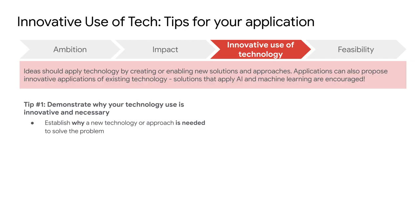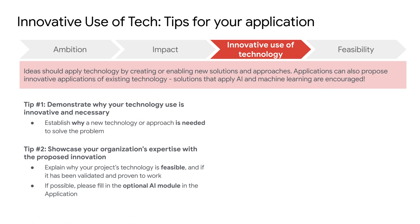When it comes to the innovative use of technology, we have two tips to help your organization stand out. Tip number one is to offer evidence of why the technology proposed in your application is innovative and essential. Think back to the problem you described in the ambition section — why is this technology the right one? After you've convinced us why the technology you've proposed is suitable to solve your problem, tip number two is to showcase your organization's expertise to be able to build or harness this technology. Let us know if you've tested and validated some parts of the technology already and what the results were. Another great way to demonstrate your expertise is to complete the optional AI module in the application — even though it's optional, we highly encourage you to take the time to complete it.